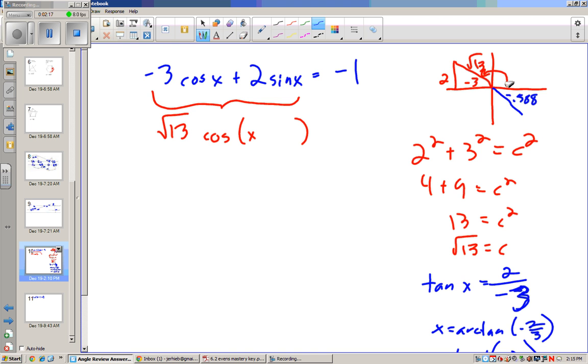Now to get it over in this quadrant, what we're going to have to do is add pi to it. So negative 0.588 plus pi will give us 2.554. Alright, 2.554.